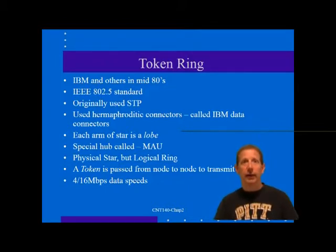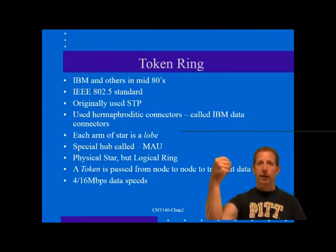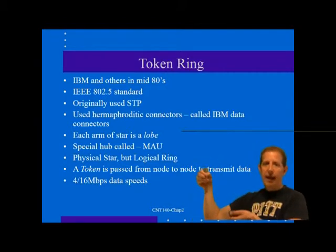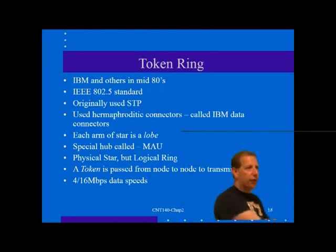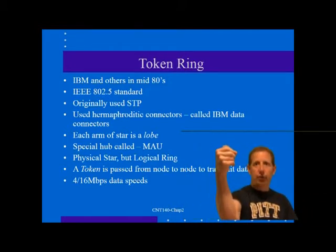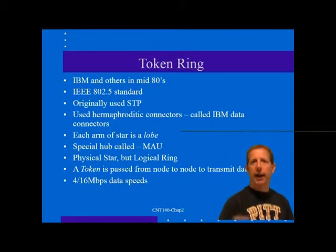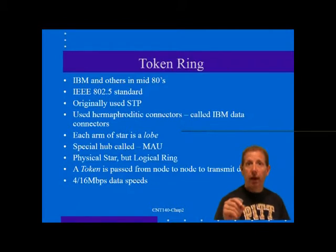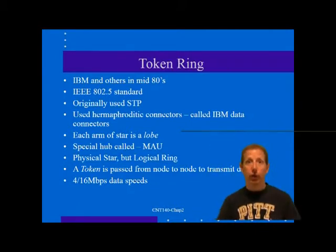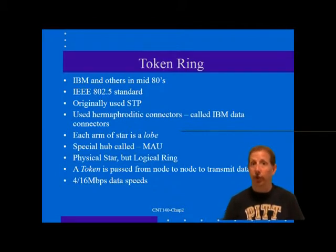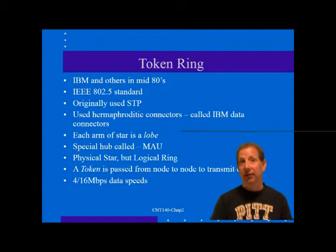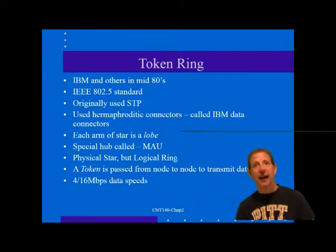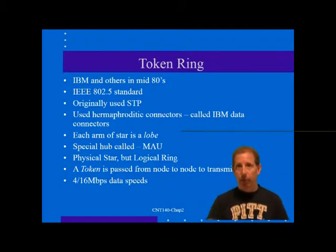A station may transmit only when it has the token — it's like a talking stick: you cannot talk until you have it. The token goes around the ring, and when it gets to your station, you grab the stick, put your data out on the line, and your data traverses the ring until it reaches its destination. At that point, a free token is put back onto the loop. The Token Ring signaling structure is called Differential Manchester Code, which has no DC voltage component and can thus be directly inductively or capacitively coupled to networking components. This lends itself to the self-healing aspect of the physical topology.